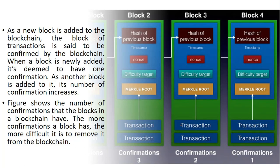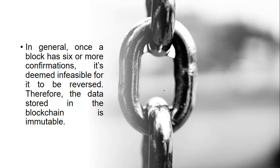As a new block is added to a blockchain, the block of transactions is said to be confirmed. When a block is newly added, it has one confirmation; as another block is added, the number of confirmations increases. The figure shows the number of confirmations a block in the blockchain can have. The more confirmations a block has, the more difficult it is to remove it from the blockchain. In general, once a block has 6 or more confirmations, it is deemed infeasible to be reversed, and therefore the data stored in the blockchain becomes immutable. That's why we call blockchain an immutable ledger.